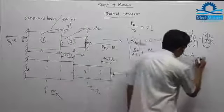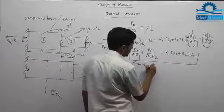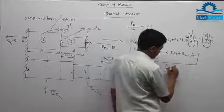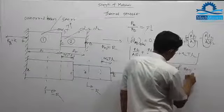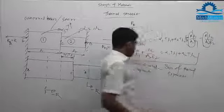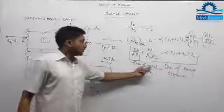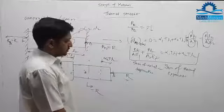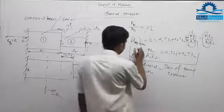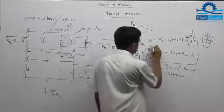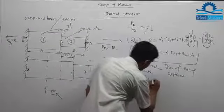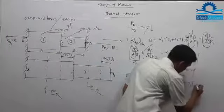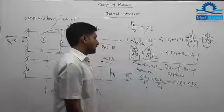This gives us the key relationship: sum of axial deformation equals sum of thermal expansion. Since R/A1 = sigma1 and R/A2 = sigma2, we can write Equation 1 as: sigma1·L1/E1 + sigma2·L2/E2 = alpha1·T·L1 + alpha2·T·L2. To solve any statically indeterminate thermal problem, convert it into two equations with two unknowns.